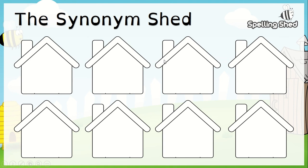There are eight sheds on that page, so you can only do eight on there. I said at least five — if you want to do all ten, brilliant — but at least five sheds, please. I'm just going to take you back to the page that has the spellings on, so you can pause that and write down your spellings.